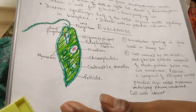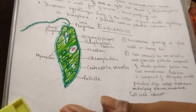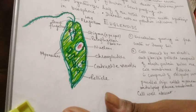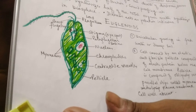Today we will continue with the Protist chapter and discuss the euglenoids, slime molds, and protozoan protists. Let us begin with the euglenoids. What are the characteristics of euglenoids?